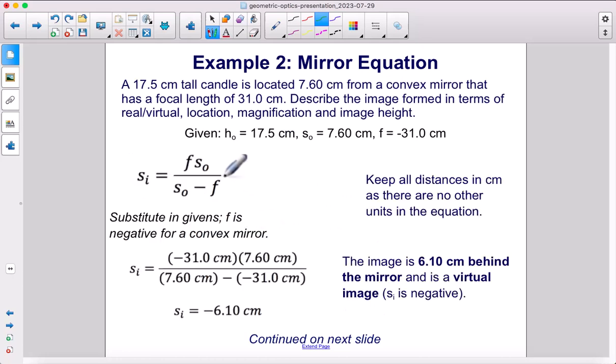Next, we substitute in our givens. The most important thing to remember is that since this is a convex mirror, the focal length will be negative. You're going to have a negative sign in here. You're going to have another one there. The image will be 6.1 centimeters behind the mirror. Therefore, it is a virtual image.